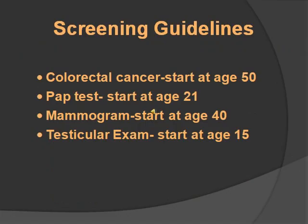Screening guidelines to know: colorectal cancer screening starts at age 50; Pap smear starts at age 21; mammogram starts at age 40; testicular exam starts at age 15. If risk factors are present or there is a family history, screening may begin earlier. For fall risk assessment, use the Morse Fall Scale.